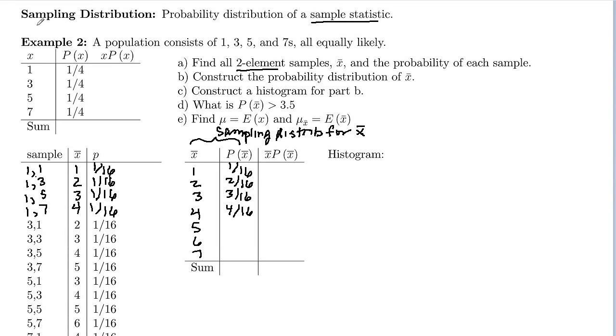Yesterday we looked at sampling distributions, which were probability distributions for a sample statistic. We were looking at the probability distribution of the sample mean, where you take repeated samples and find the mean of those samples.